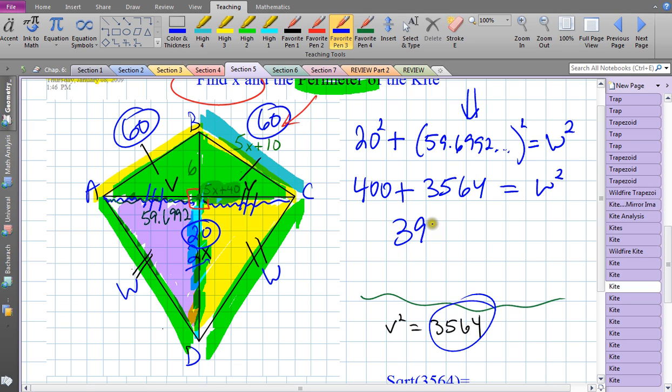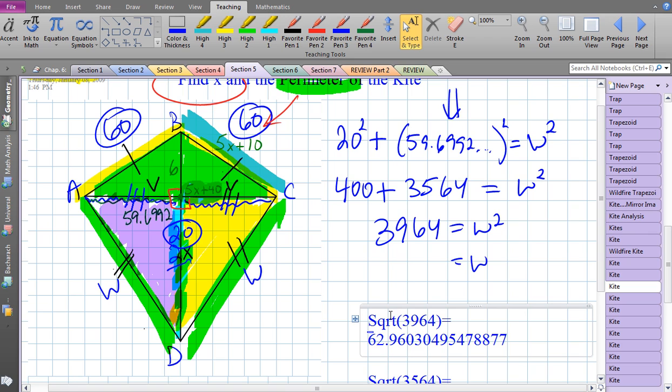All together here it looks like we have 3964 that equals w squared. In order to find w we need to take the square root, and my tablet is going to help me. I'm going to take the square root of 3964 and it's telling me it is 62.9603. So that implies that this side is going to be 62.9603.